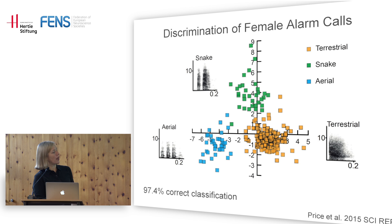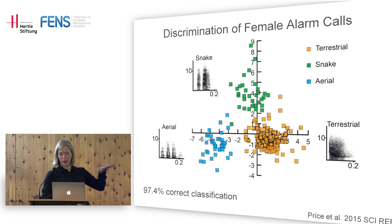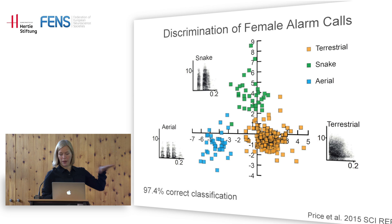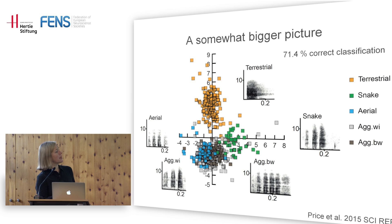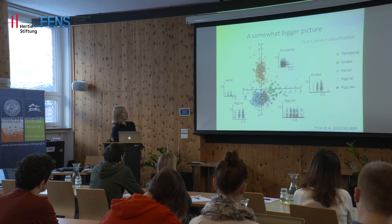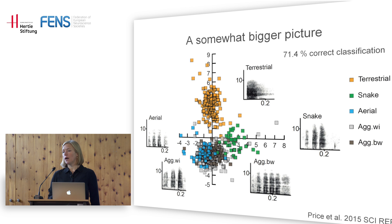For the female alarm calls, if you look only at the three types of alarm calls, we find nice clustering and high discriminability — a large cluster of terrestrial alarm calls, and then snake and aerial alarm calls — basically replicating what's in the literature. But the situation changed completely when we added calls given in non-alarm contexts. We ended up with two large clusters: one containing terrestrial alarm calls, which still stand out, and a big spread where aerial alarms, within-group aggression, between-group aggression, and snake alarms all overlap considerably.